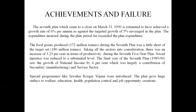Some shortcomings in the agricultural sector were also present. Though there was an intensive mode of agriculture during the Seventh Five-Year Plan, food grain production did not achieve the target. The targeted food grain production was 180 million tons per year; however, only 172 million tons were produced — about 8 million tons short of the target. Nevertheless, taking all sectors into consideration, there was an increase of 3.23% in terms of productivity during the plan.